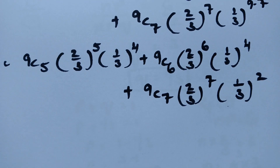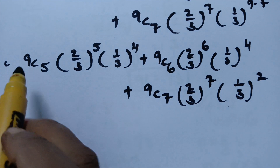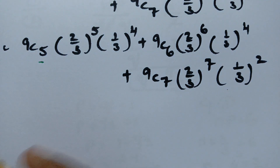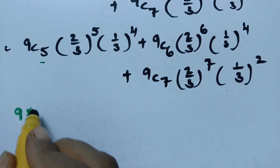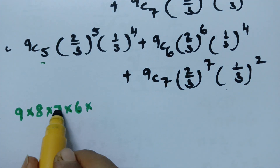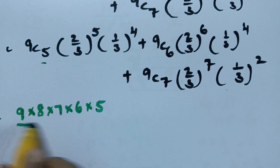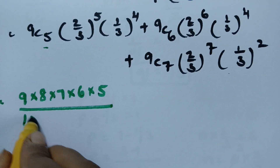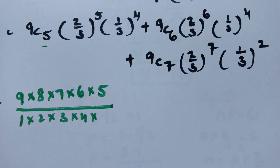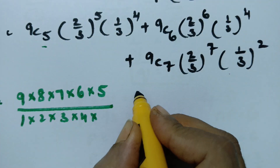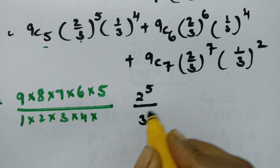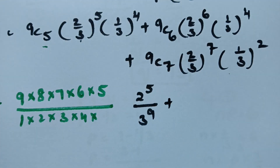NCR = N! / [(N−R)! × R!]. For 9C5, using the shortcut of 5 backward steps: (9×8×7×6×5) / (1×2×3×4×5). This gives 126. The term becomes 126 × 2^5 / 3^9, since (1/3)^4 × (1/3)^5 = 1/3^9.